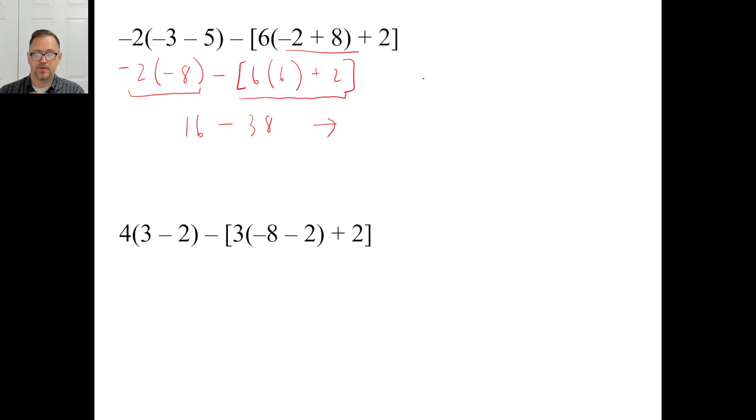16 minus 38, all you need to do is go, all right, forget this, absolute values. 38 minus 16 is 22. And let's see. That's a 16, a positive 16, and a negative 38. Which one's farther away from the origin? Negative 38 is, so that is our answer, negative 22. Boom. Okay. Pause it and try the second one.